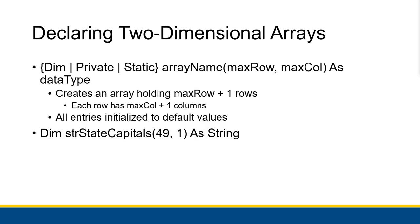Here is how you declare a two-dimensional array. It's very similar to a one-dimensional array, except rather than just putting the maximum subscript by itself in parentheses, you pass in the maximum row and then the maximum column separated by a comma. This will create an array holding max row plus one rows, and each row has max column plus one columns — so you're essentially making a max row plus one by max column plus one table.